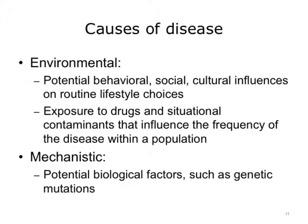What are mechanistic causes of disease? Mechanistic causes of disease are biological factors which may also influence the frequency of disease. An example of a potential environmental influence on disease includes the recent oil spill in the Gulf and the downstream effects of the oil spill on the food chain for the population living within that region. An example of potential mechanistic or biological causes for disease include genetic mutations such as the BRCA1 or BRCA2 gene mutations that increase an individual's lifetime risk for developing breast, ovarian, and other cancers.